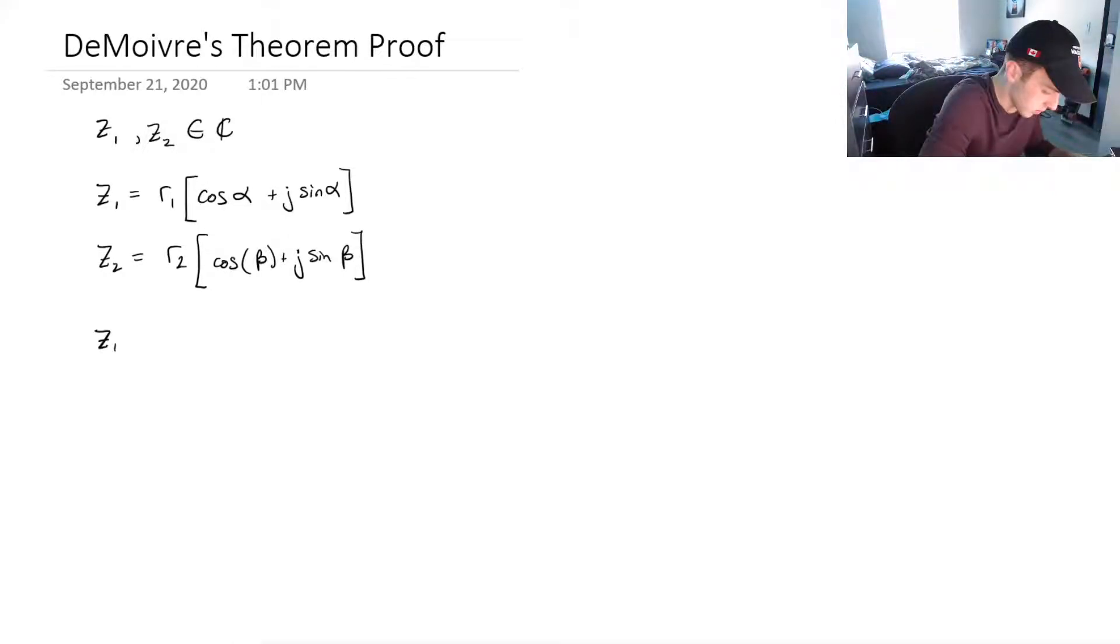Let's just multiply z1 and z2 together. z1 times z2, and that'll be r1 cos alpha plus j sin alpha times, and then r2 cos beta plus j sin of beta.